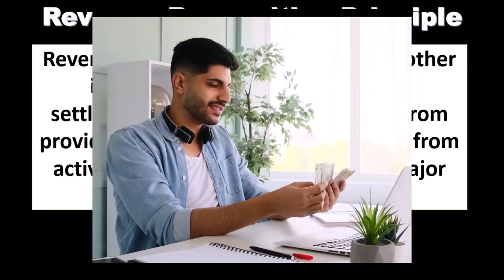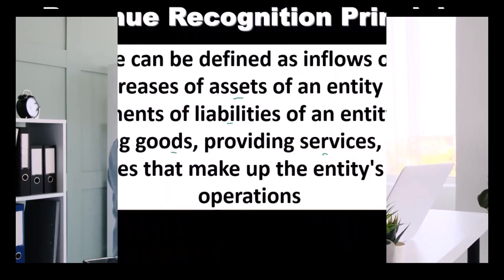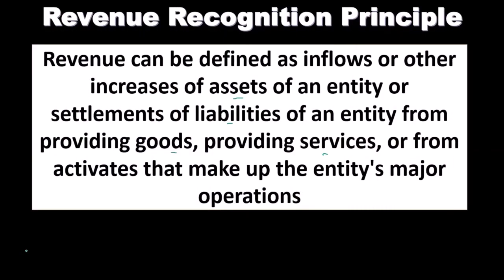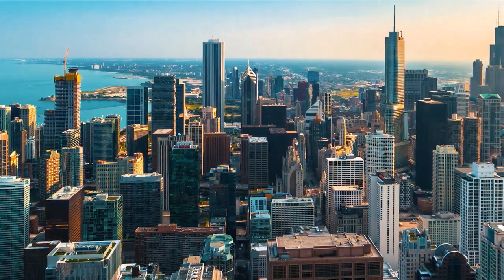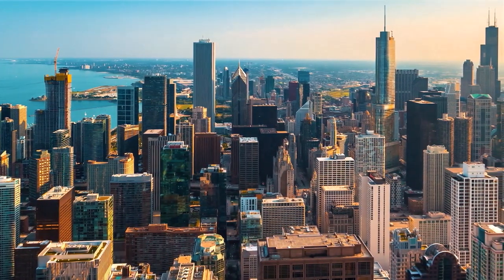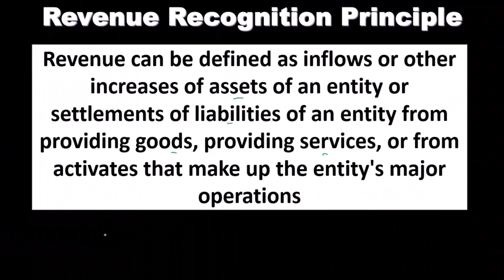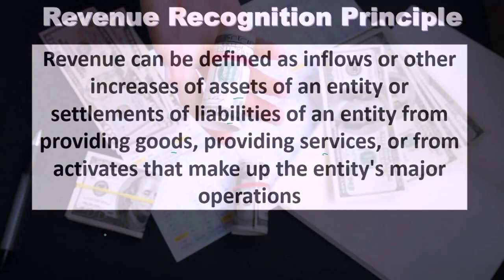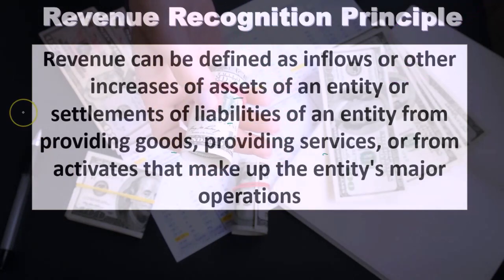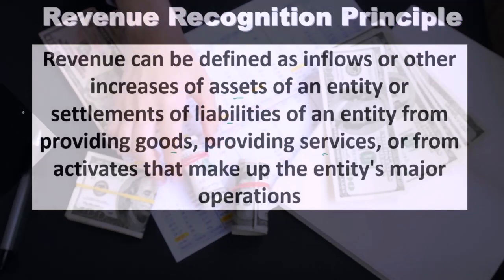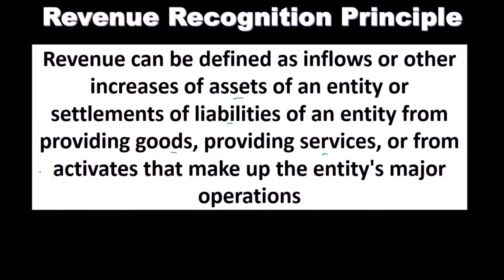Revenue comes from providing services — non-inventory related for a service-type company — or from activities that make up the entity's major operations. When we are considering revenue, we're typically considering those major operations. For example, if we're in the business of selling inventory and we happen to sell stocks and bonds or earn interest, capital gains, or dividend income, that would be another type of income, but it's not going to be our principal revenue recognition in the operations of the business.